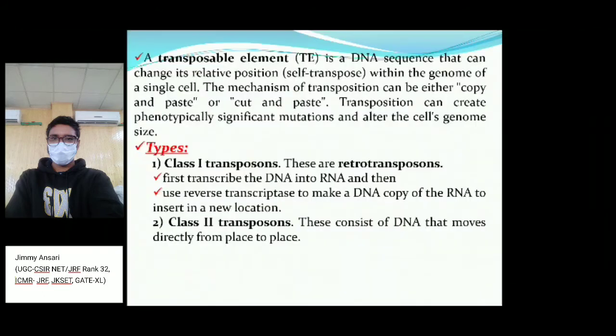Class one transposons and class two transposons. Class one transposons use a copy-and-paste mechanism; these are called retrotransposons because they first make a copy of RNA, then convert it back into a DNA sequence. Class two transposons consist of DNA that moves directly from place to place using the cut-and-paste mechanism.